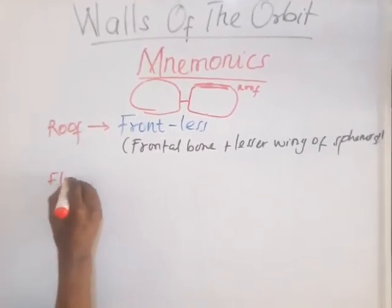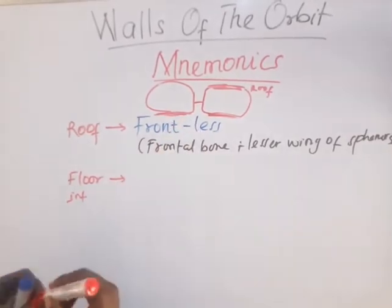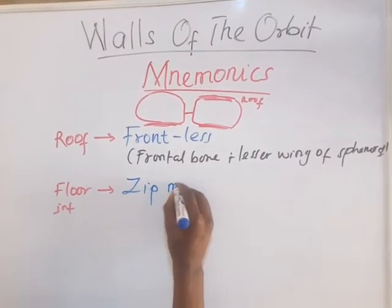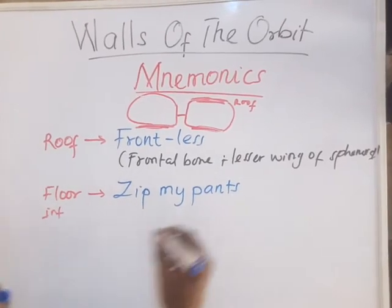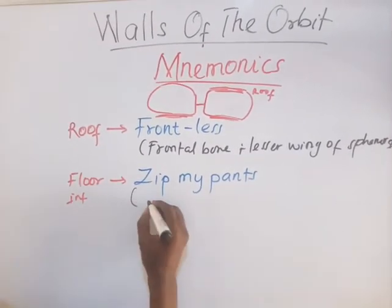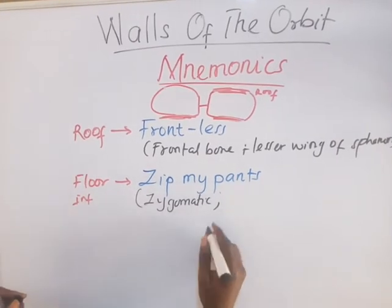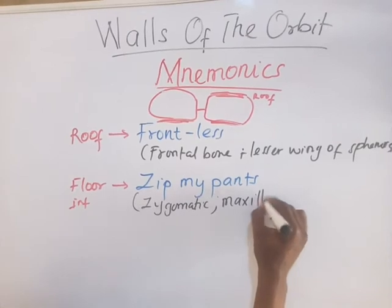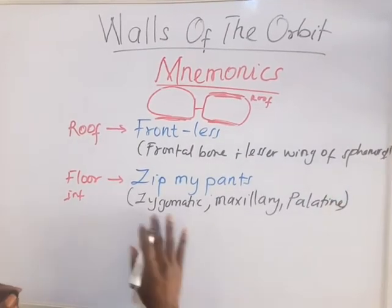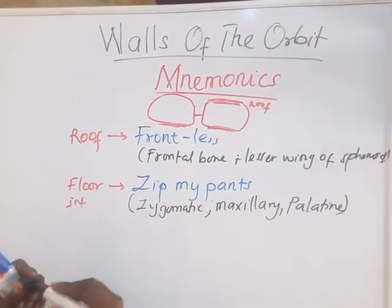Now for the floor — the inferior wall — the mnemonic is 'ZIP MY PANTS.' Z is for the zygomatic bone, M is for the maxillary bone, and P is for the palatine bone. So three bones form the floor of the orbit: zygomatic, maxillary, and palatine.